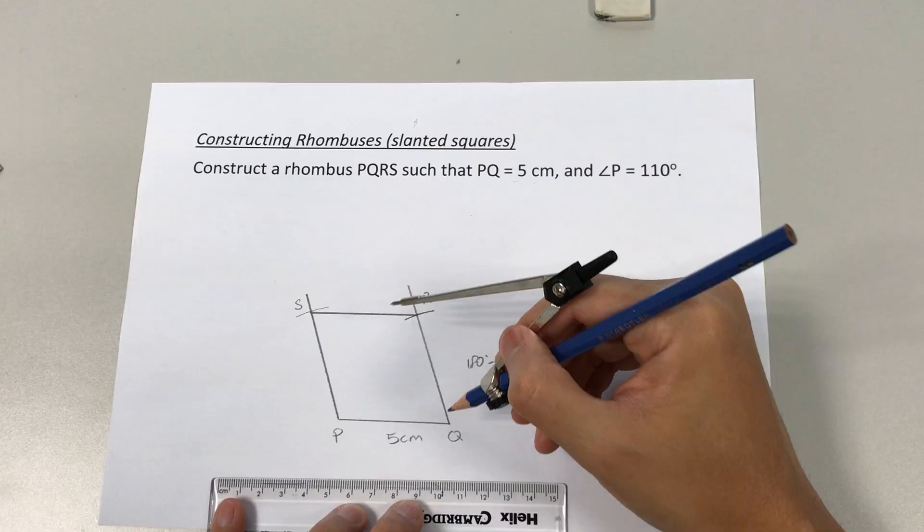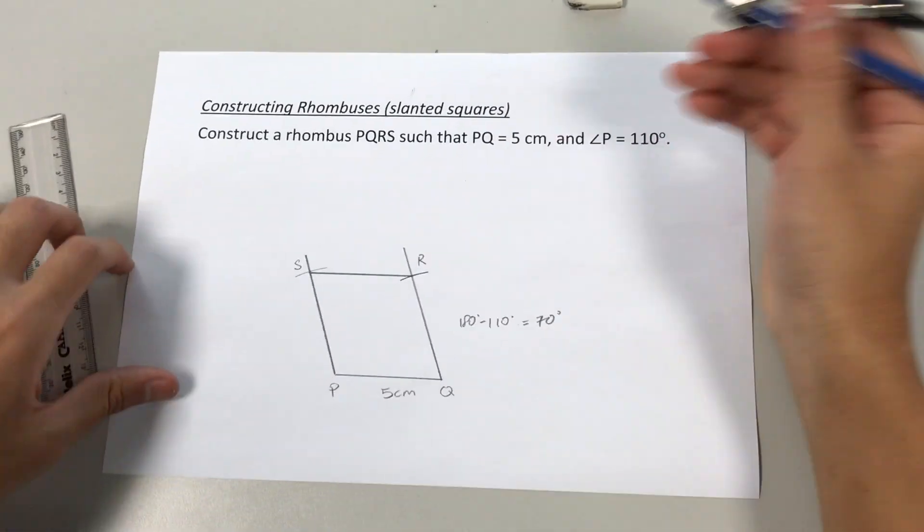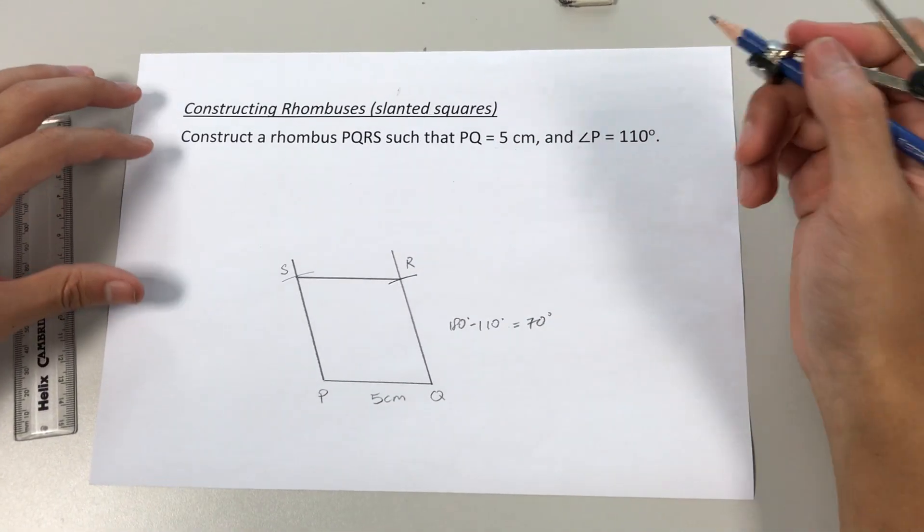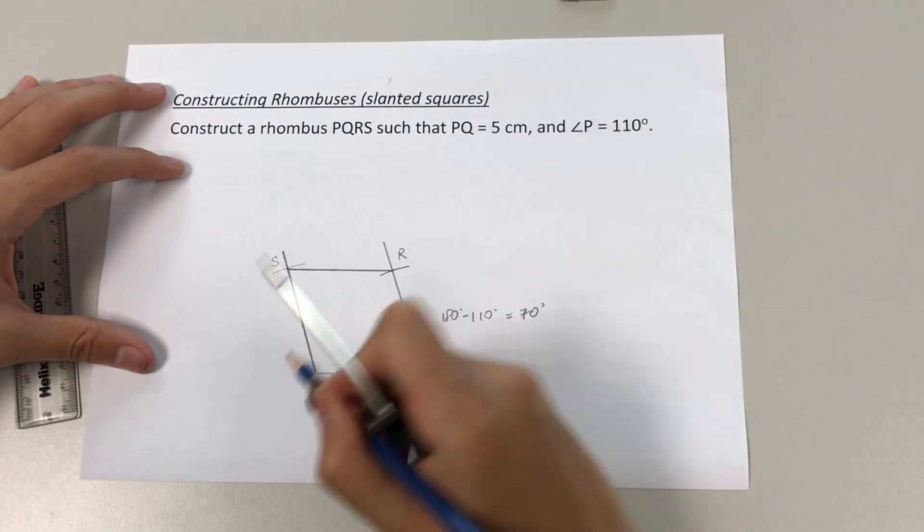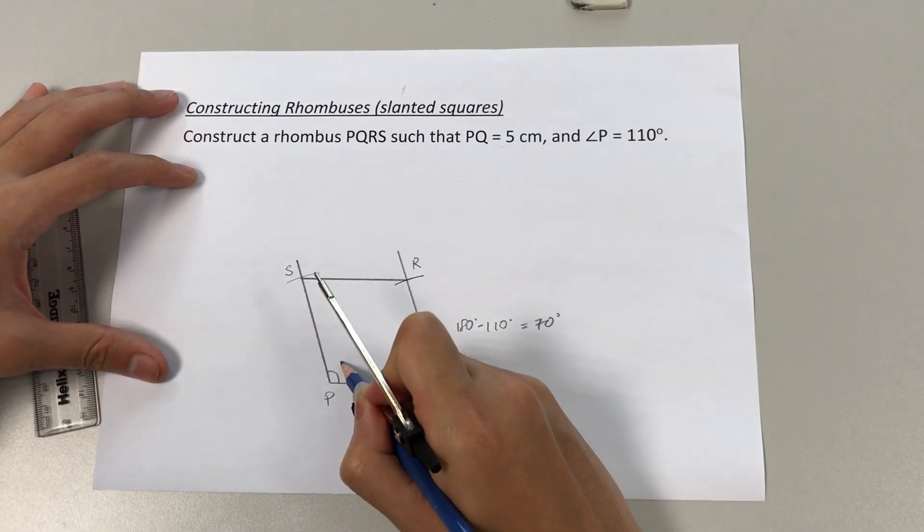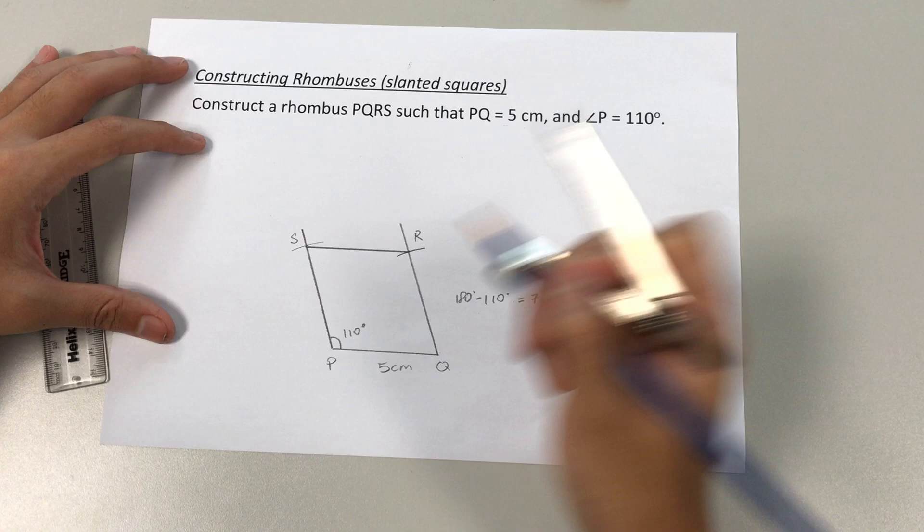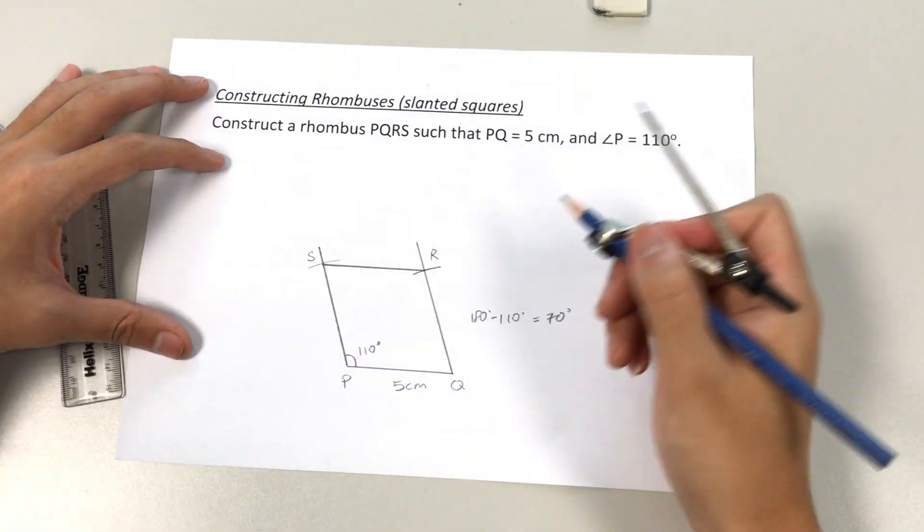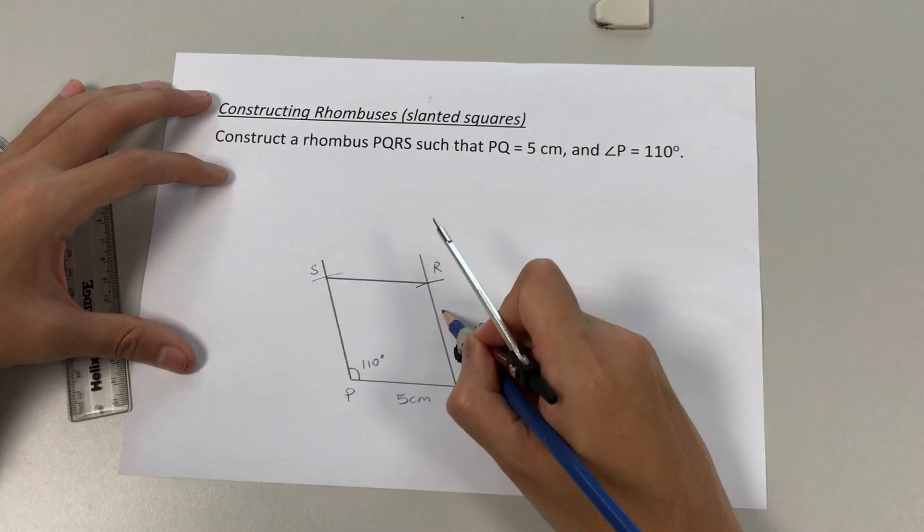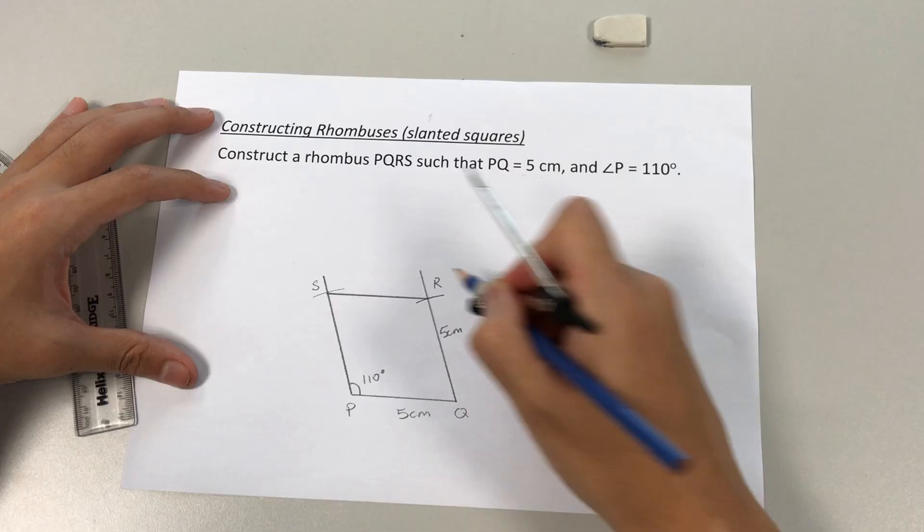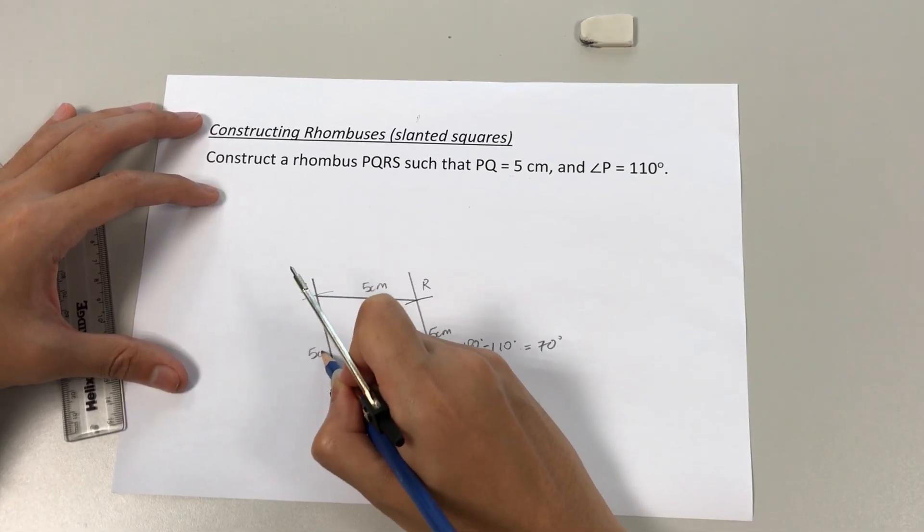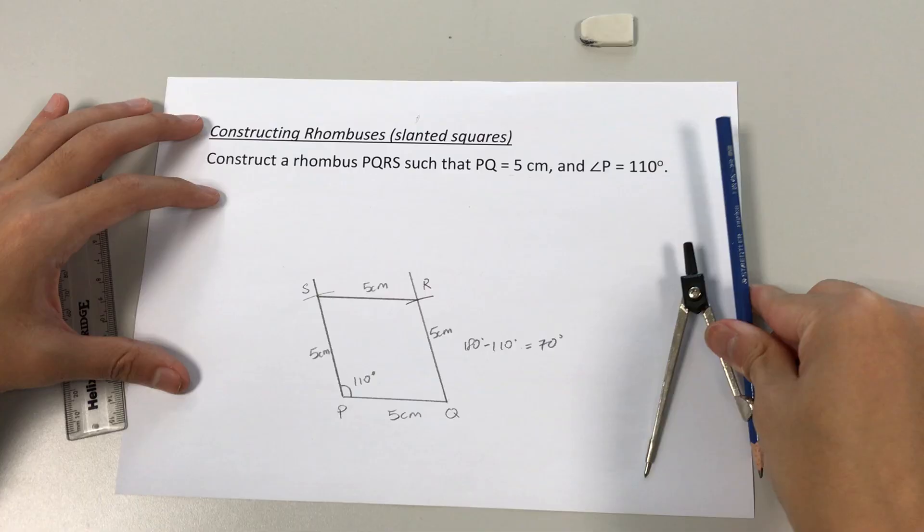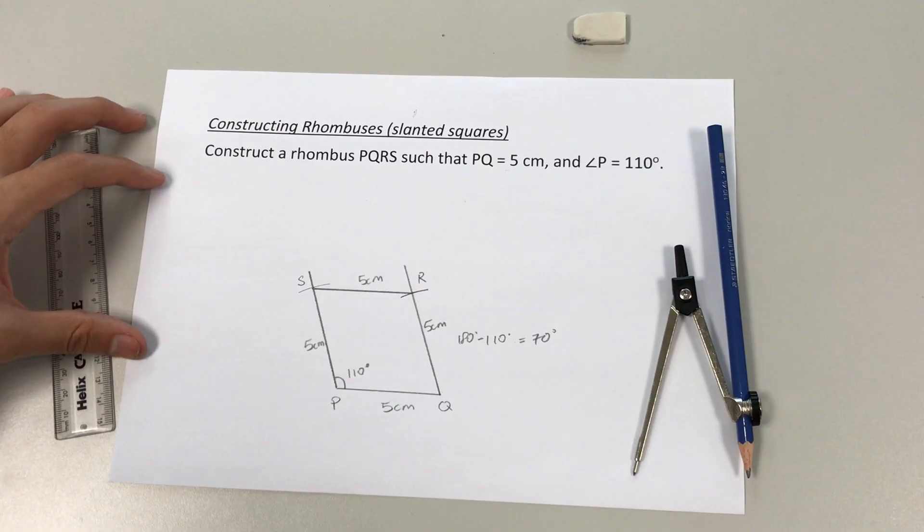All right. So now P, Q, R, S is a rhombus. Okay, and we still have to add in the labeling. So finally, angle P is 110, we shall label 110 degrees. Since a rhombus has four equal sides, we should label 5cm, 5cm, and 5cm. And that's how you construct a rhombus.